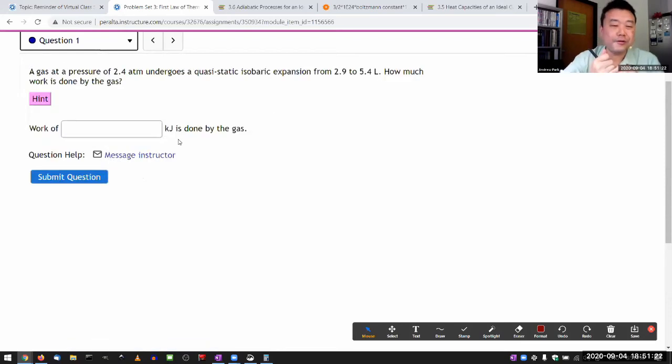The reason I wanted to do question one was to show you a trick about dealing with the units. A lot of the units in this problem set are given in terms of atmosphere, which is the most common and convenient pressure unit, and liters, which is easy enough to convert to cubic meters. The unit for work is asked for in SI units.